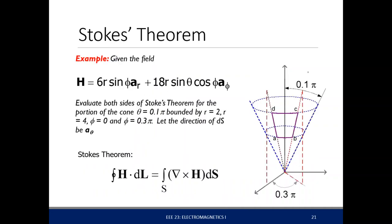An example: given the field, evaluate both sides of Stokes' theorem for the portion of the cone where theta equals 0.1π, bounded by r equals 2 to r equals 4 and phi from 0 to 0.3π. Let the direction of dS be a-theta. So Stokes' theorem is this.